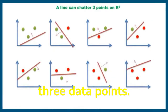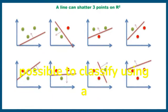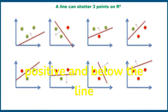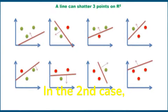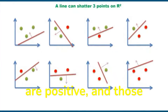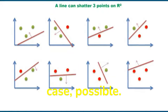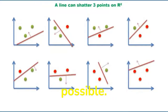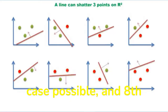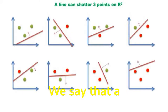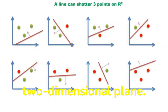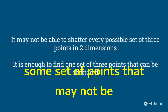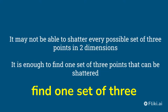Now let us have another set of three data points and check whether it is possible to classify using a straight line. In case one it is possible — all points above the line are positive and below the line are negative. In case two, again possible — all points below the line are positive and those above the line are negative. Cases three through eight are all possible. We say that a straight line can shatter three data points in a two-dimensional plane. It may not be able to shatter every possible set of three points, but it is enough to find one set of three points that can be shattered.